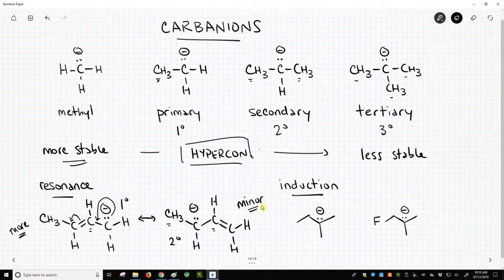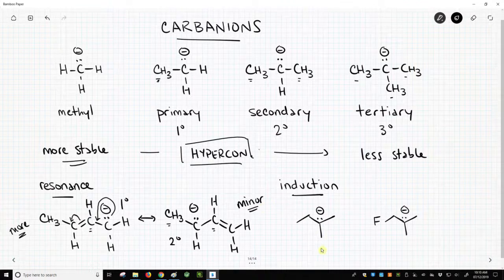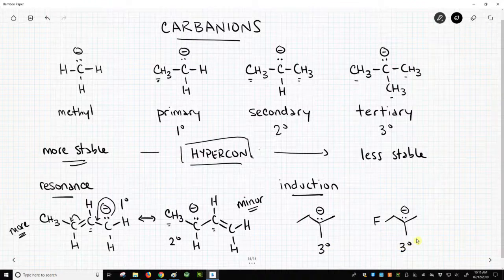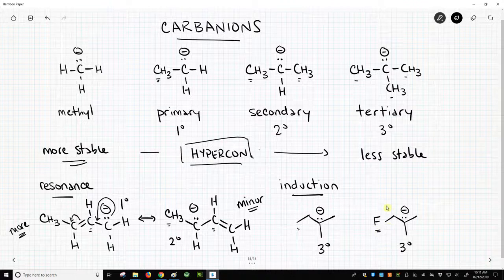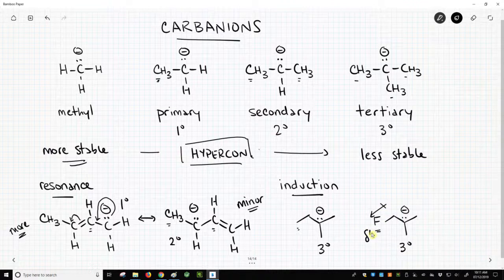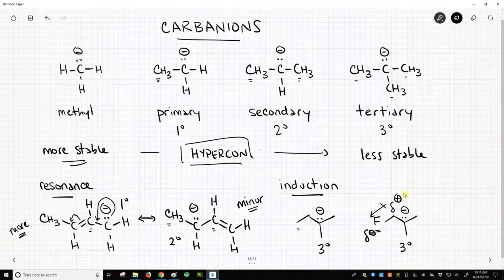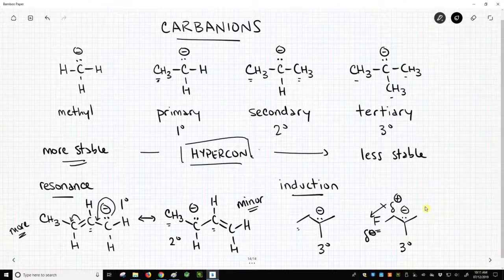We can also talk about inductive effects with carbanions. So here we have a tertiary carbanion, not very stable. This is also a tertiary carbanion. But for the right-hand structure, we change the carbon to a fluorine. That gives rise to a polarized carbon-fluorine sigma bond. That fluorine is going to bear some negative charge, a partial negative charge. This carbon is going to be partial plus. That partial plus next to the carbanion is a stabilizing effect. So we'd say the right-hand structure is actually more stable because of the inductive effect.